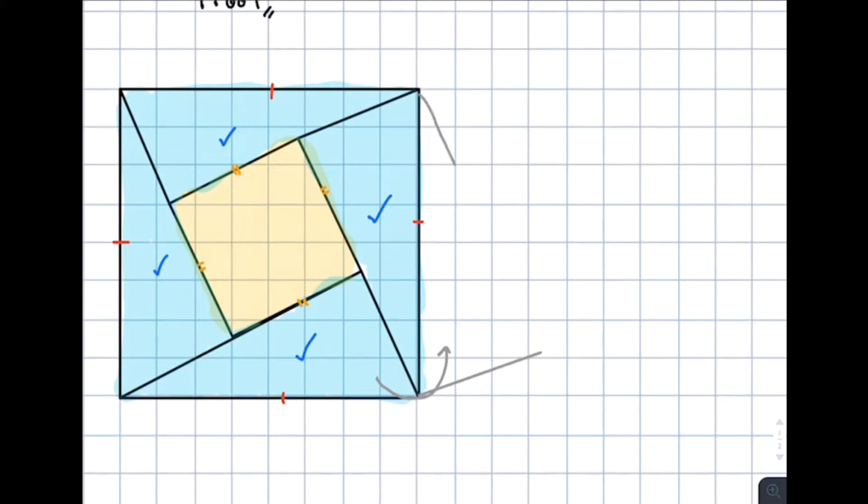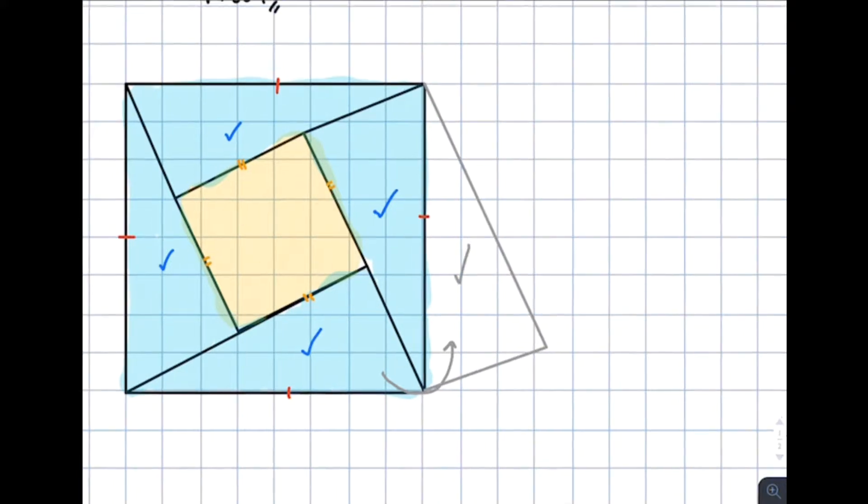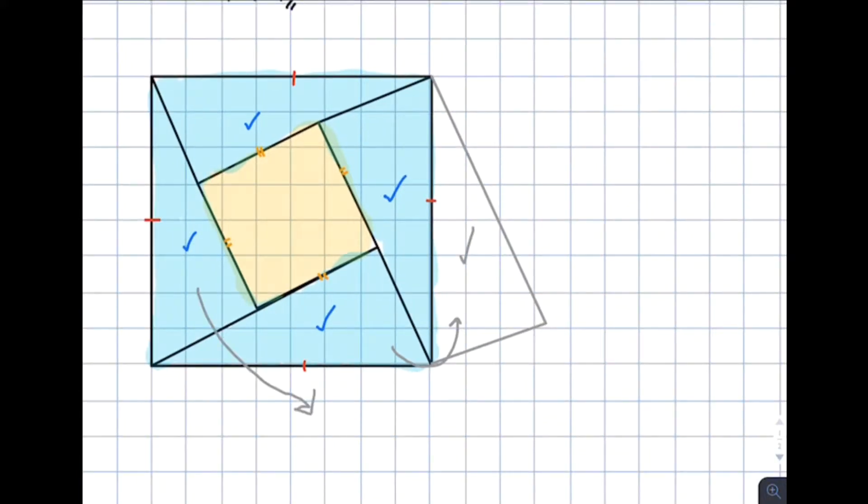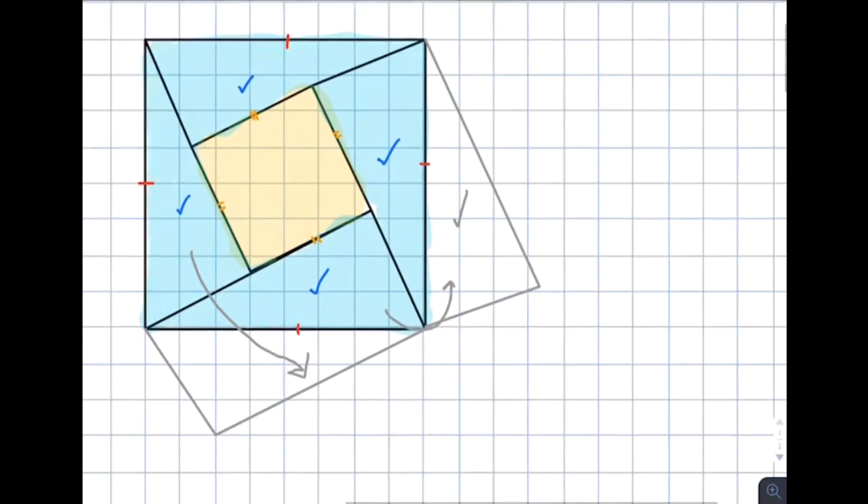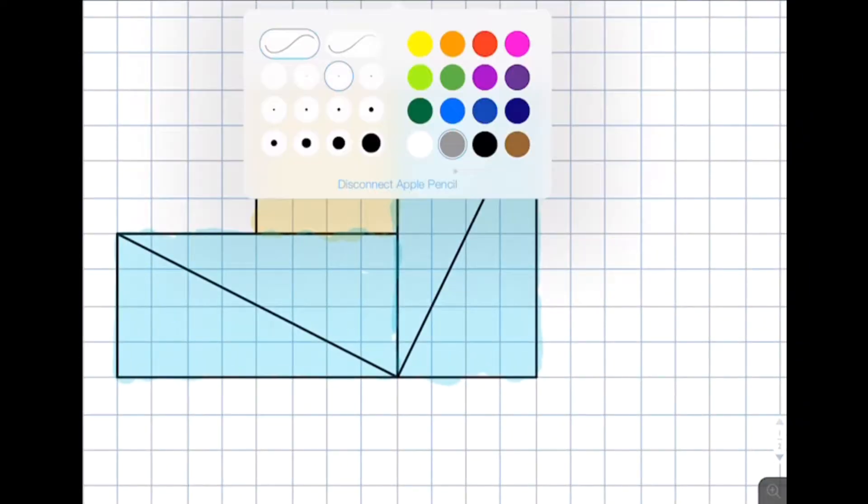Move this triangle to this side, and then move this triangle to this side. So we can get this square.